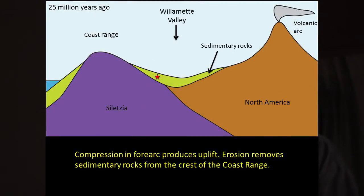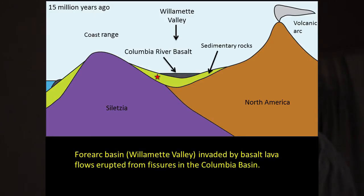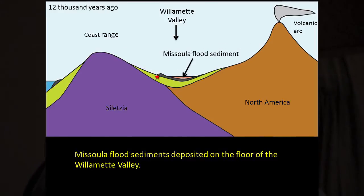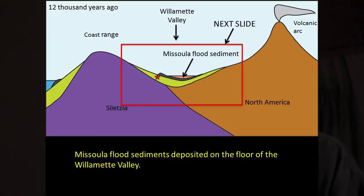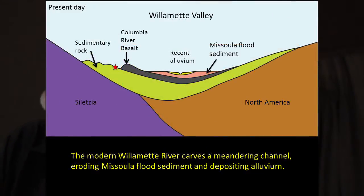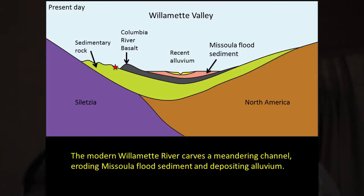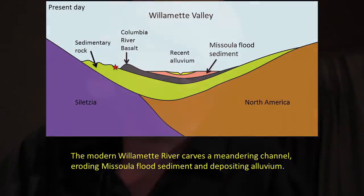Zooming in further, the Columbia River basalt then flowed in and filled the valley to a certain level. With a little more compression and folding, the Missoula flood sediments came in and filled the valley on top of the basalt. The modern situation shows the Willamette River with recent alluvium flowing into Missoula flood sediments, with hills on the flanks composed of Columbia River basalt and sedimentary rock.